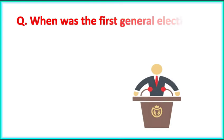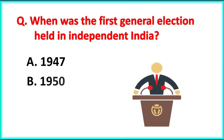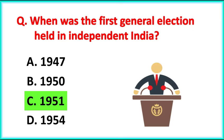When was the first general election held in independent India? The correct answer is option C: in the year 1951.